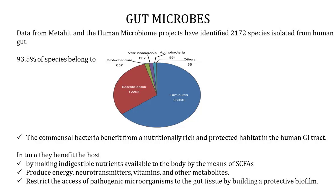Another major function is they form a biofilm — a protective layer in the gut which restricts the access of pathogenic microorganisms to the gut tissue. Also, gut microbiota plays a critical role in brain processes such as myelination, neurogenesis, microglial activation, and effectively modulates behavior and influences psychological processes such as mood and cognition.